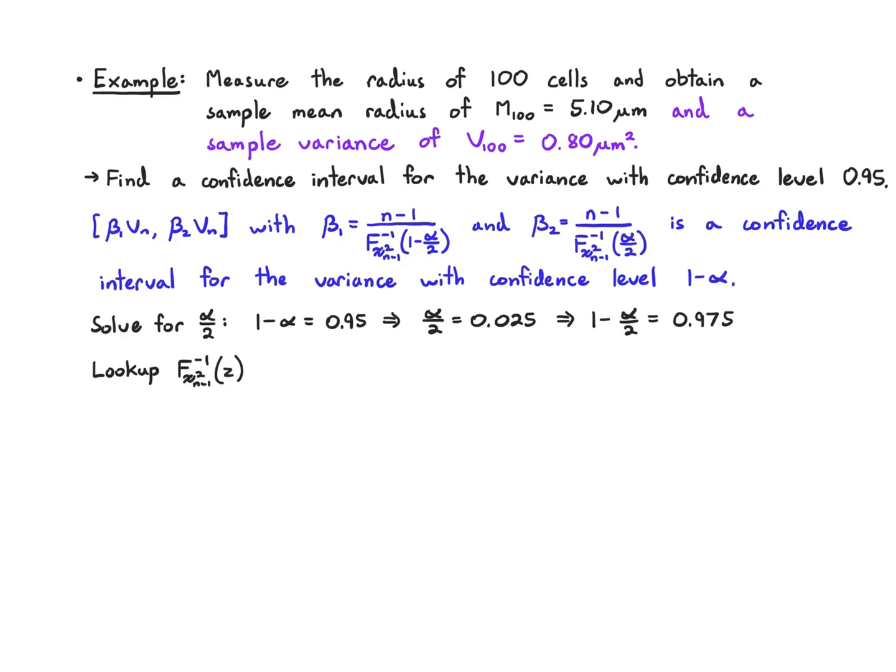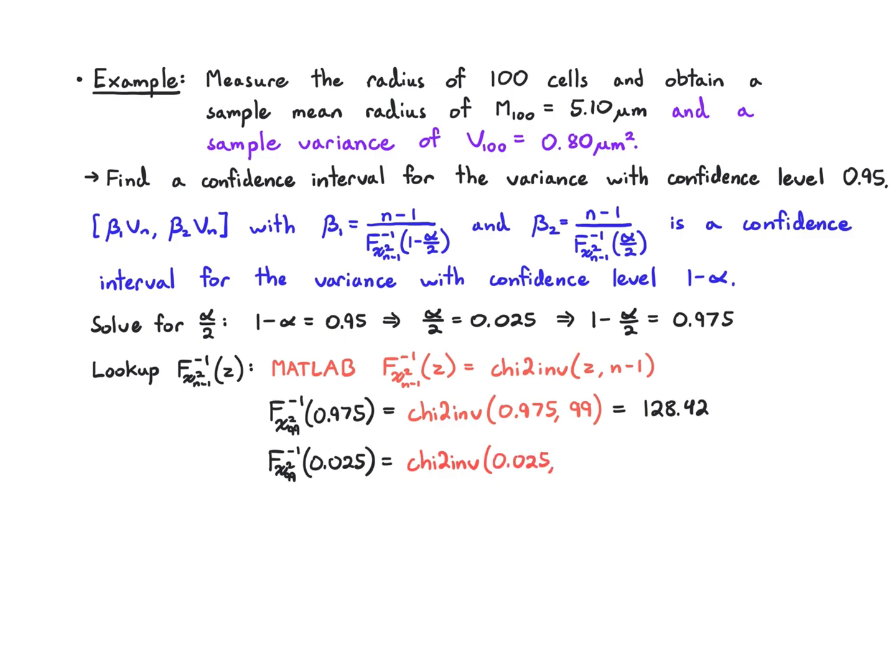I need to look up two values from this inverse CDF. In MATLAB, the way that I call this inverse CDF is I'm looking to find the inverse CDF of a chi-squared with n minus 1 degrees of freedom at z. So I say chi2 inverse of z comma n minus 1. I'm going to plug that in for both 0.975 and I have to plug in 99 because that's 100 minus 1, and I get 128.42. I do the same thing plugging in 0.025 and I get this chi2 inverse function where I plug in 0.025 and 99 and I get 73.36.